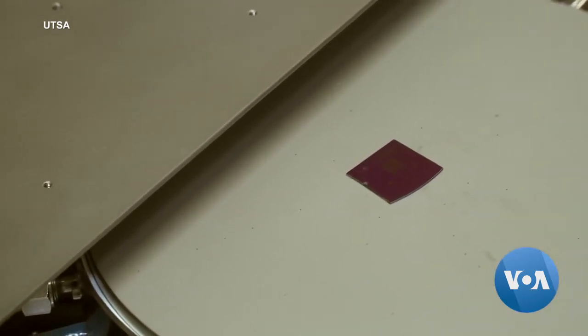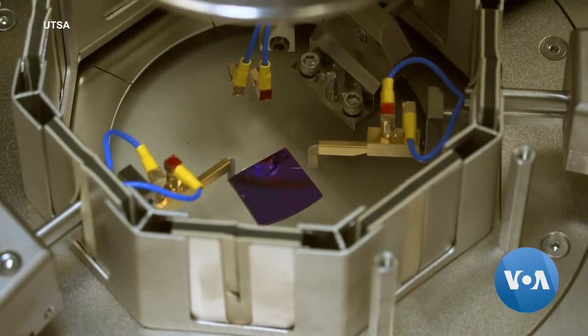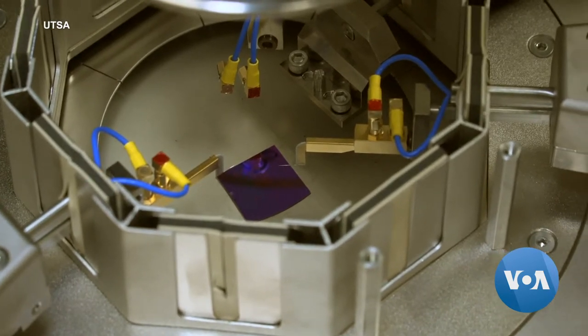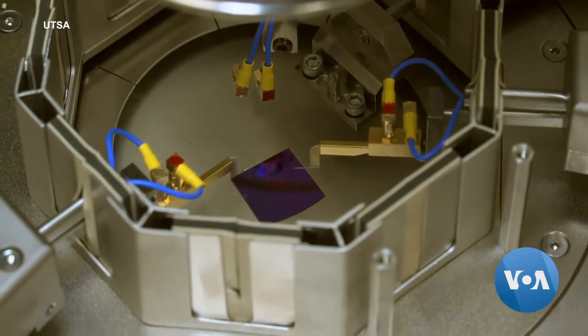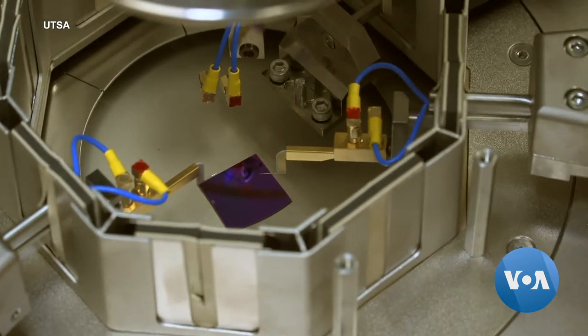and electrons, charged particles that already power most of our stuff through electricity. Because electrons are constantly spinning, they also carry another form of energy.